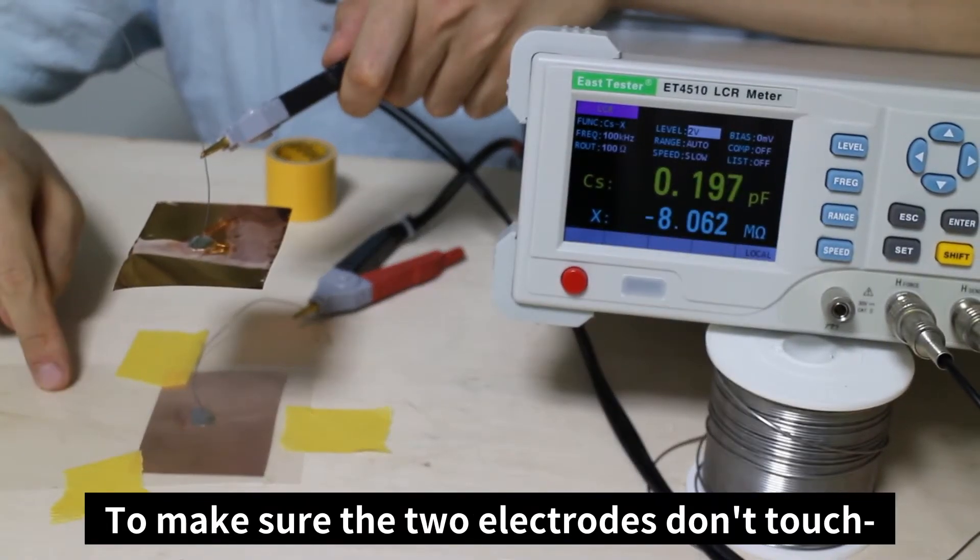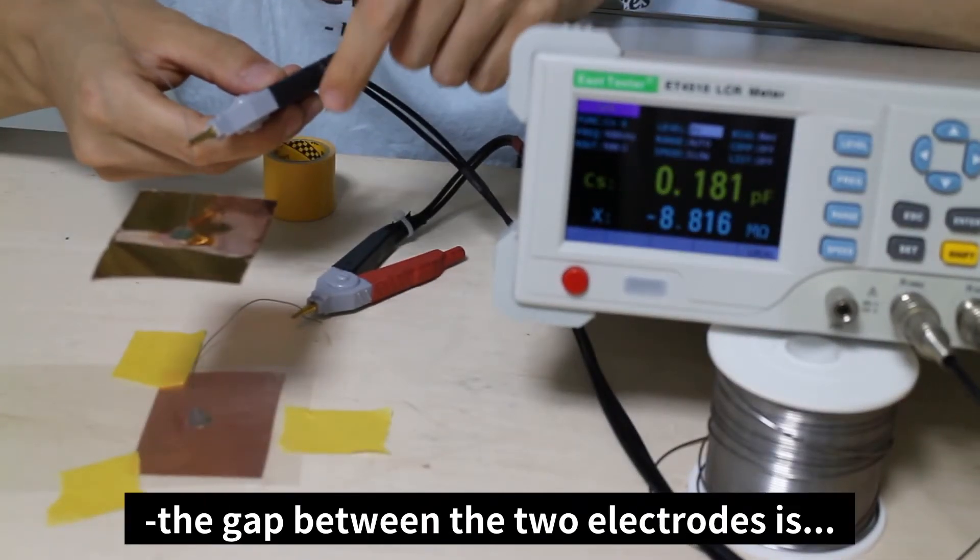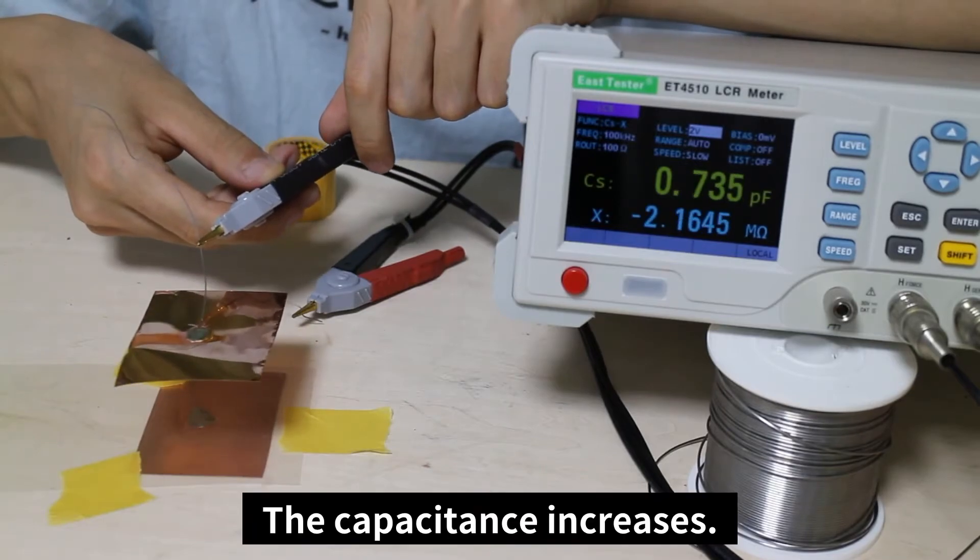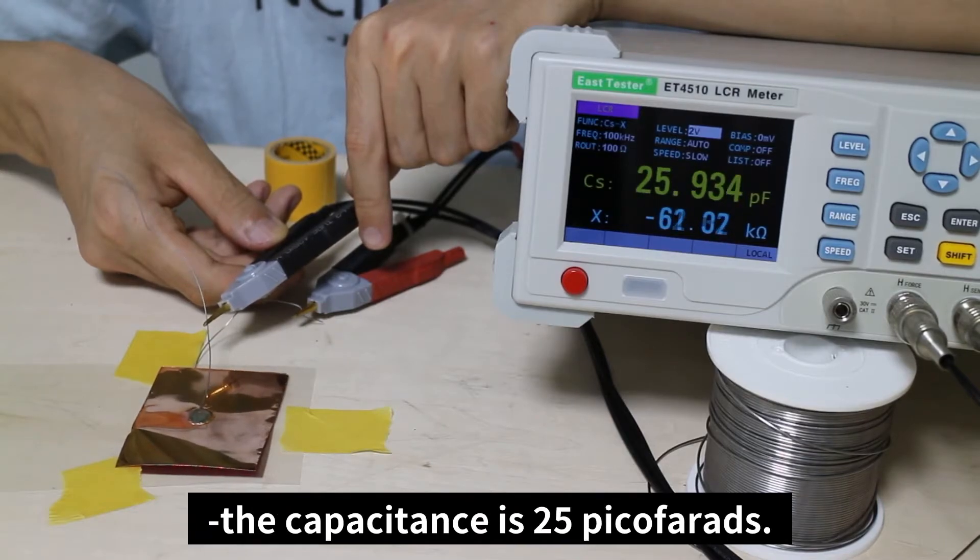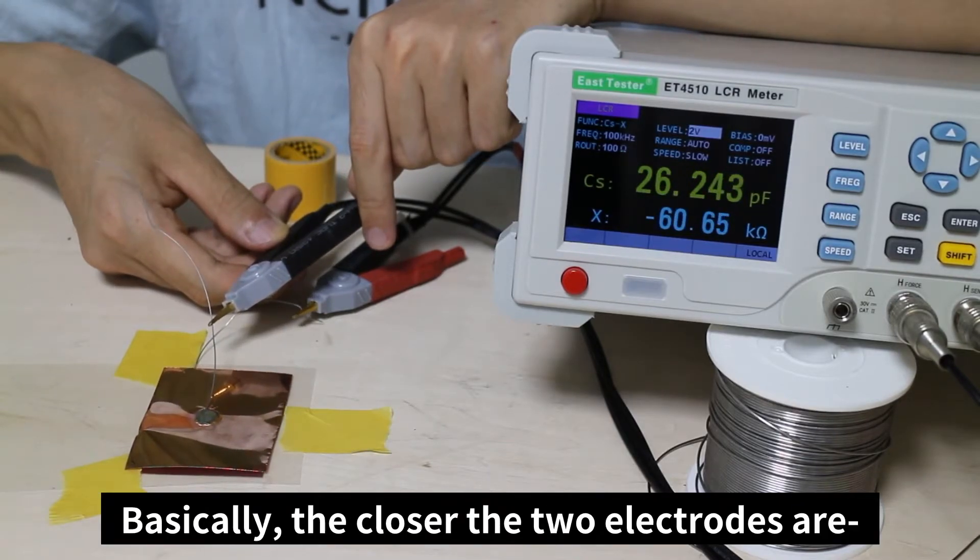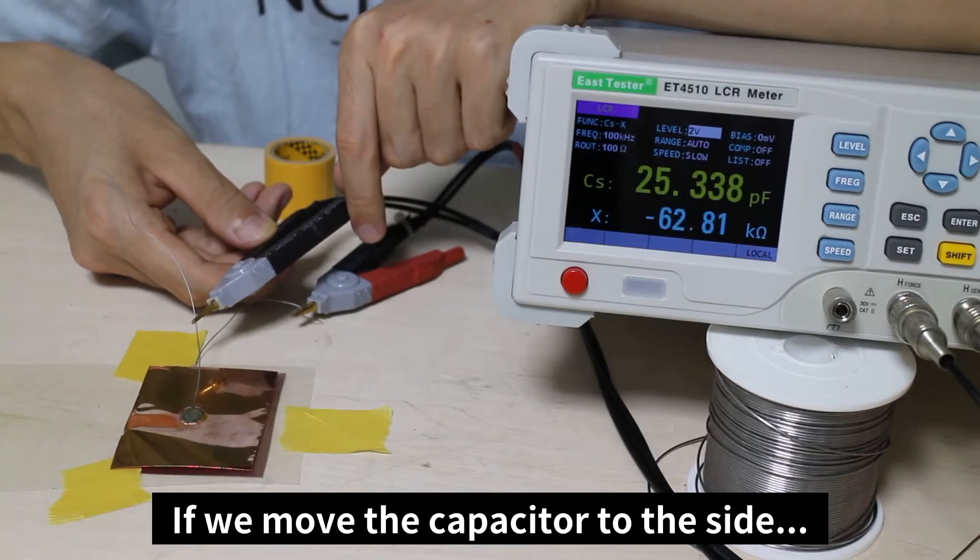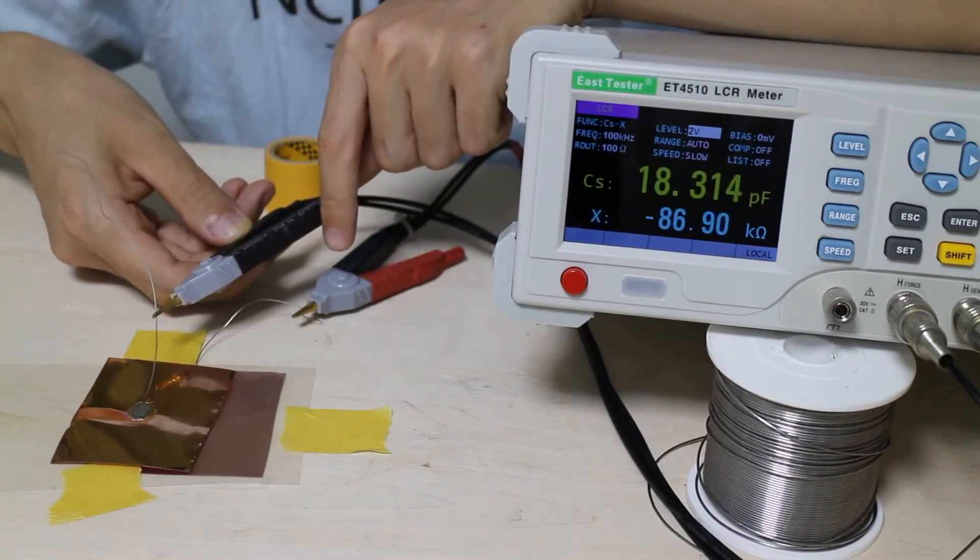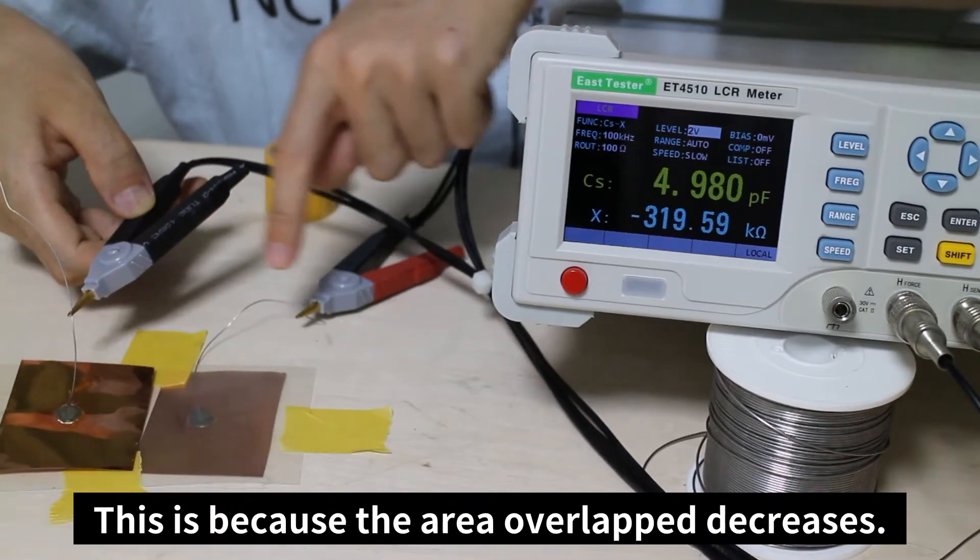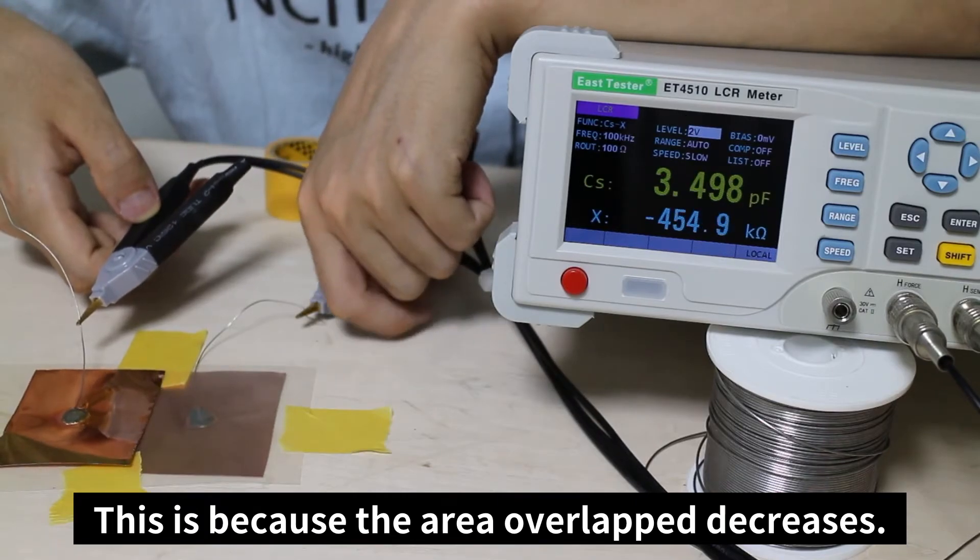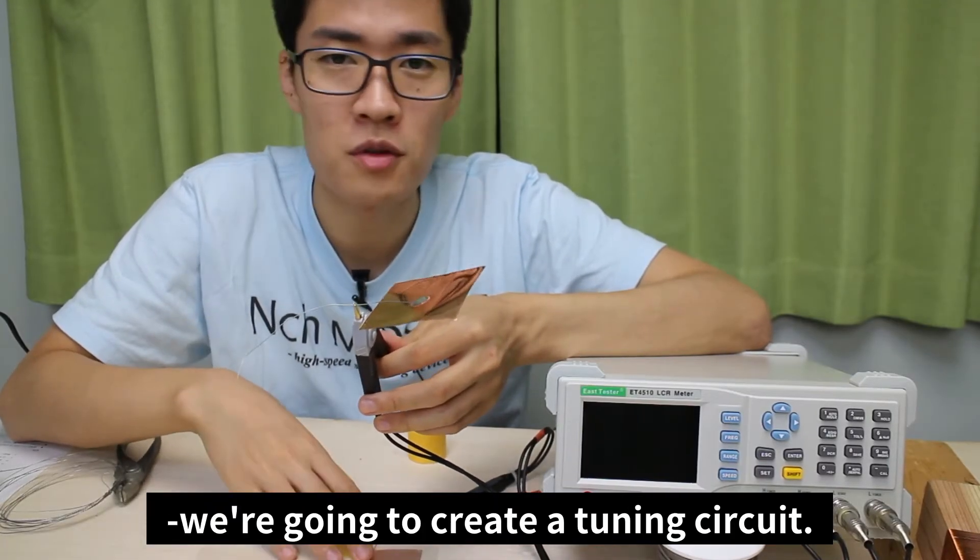To make sure the two electrodes don't touch, I've inserted an insulation sheet between the two. What happens when we close the gap between the two electrodes is the capacitance increases. When they are completely overlapped, the capacitance is 25 picofarads. Basically, the closer the two electrodes are, the larger the capacitance. If we move the capacitor to the side, the capacitance drops. This is because the area overlapped decreases. By using the properties of the coil's inductance and the capacitor's capacitance, we're going to create a tuning circuit.